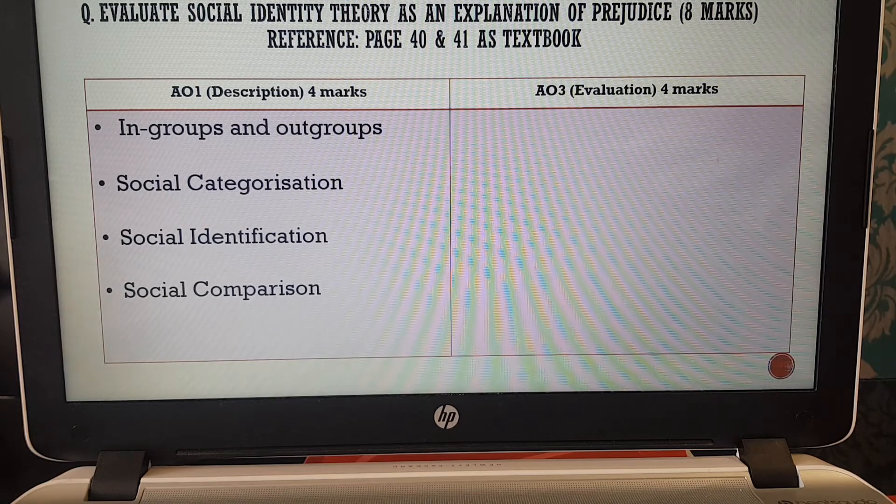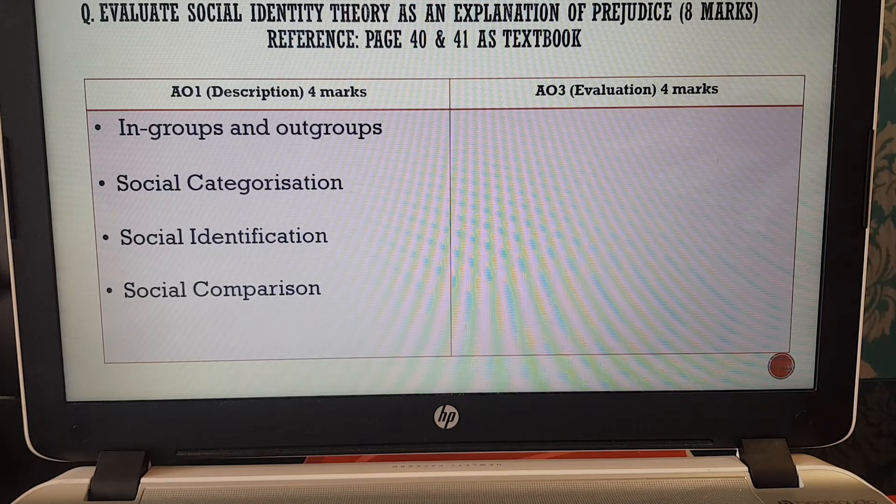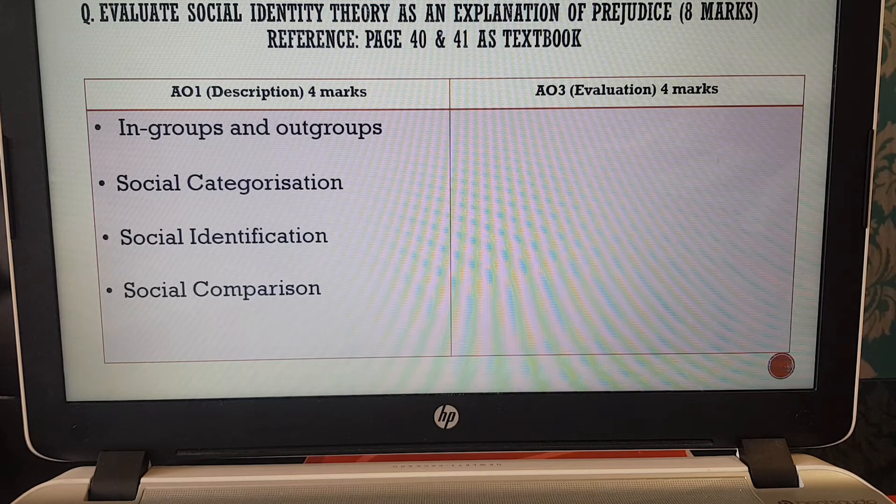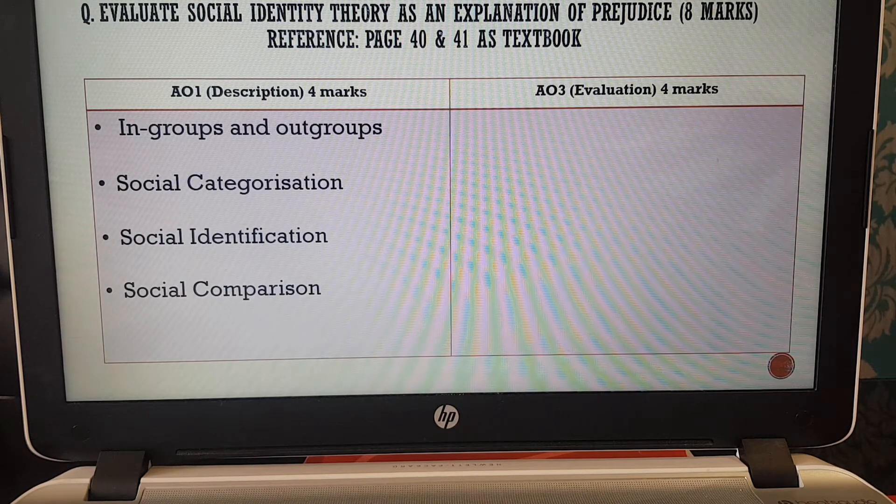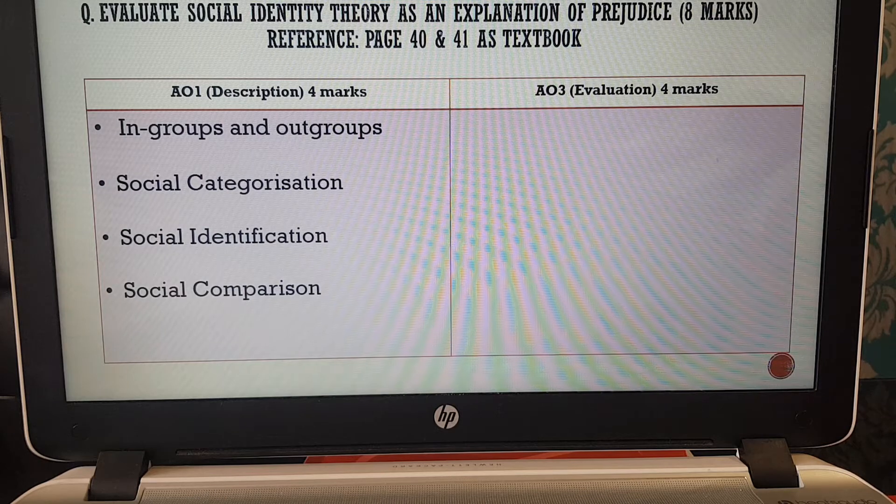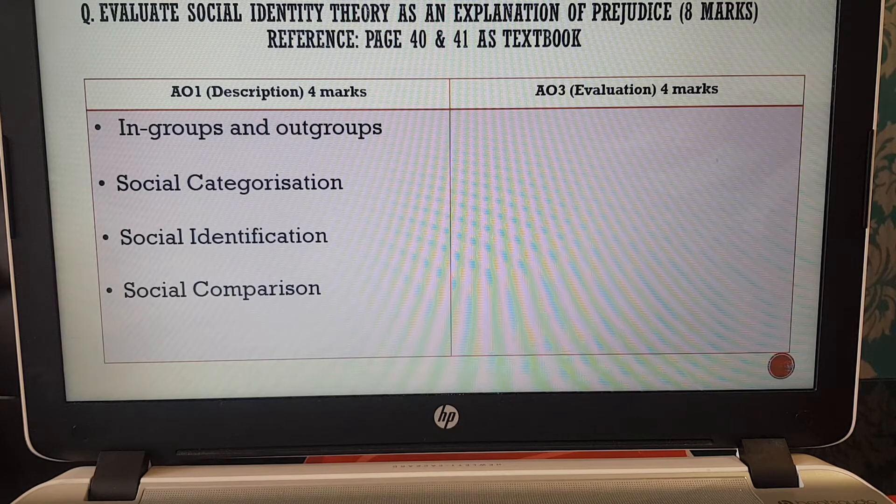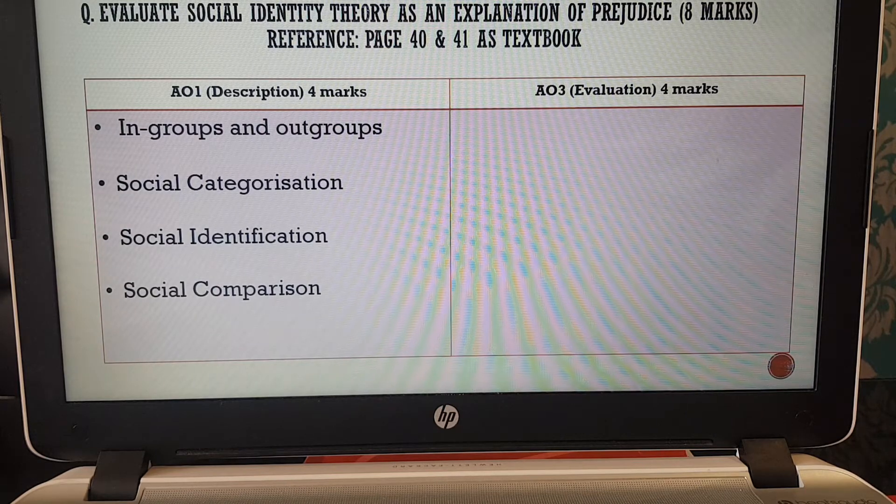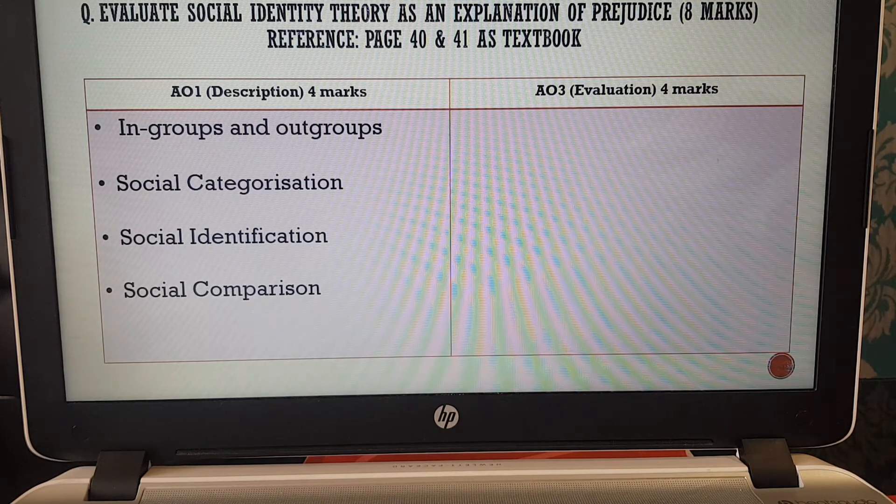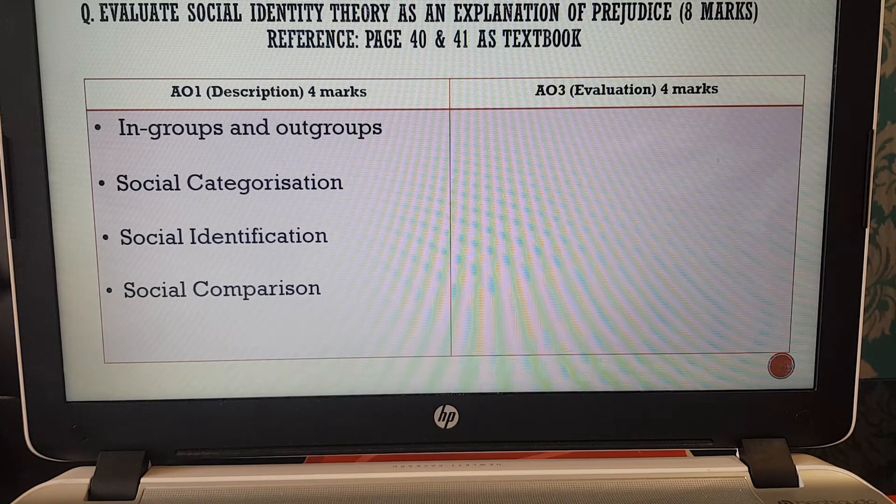Secondly is social identification. Within this stage, the individual almost adopts the beliefs, the values, and the attitudes of the group in which they belong to. So, for example, if you are a Manchester United supporter, we would expect your identity to be things like going to the matches, wearing the Manchester United football shirt, wearing a scarf, etc. So again, you're establishing your identity, your beliefs, and your values and the behavior of your in-group.